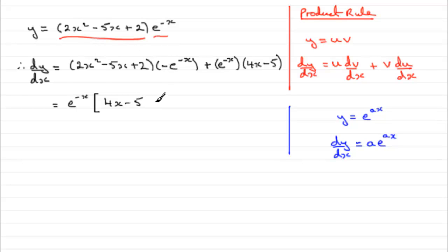But then we come on to this term, there's a minus here, so I'd want minus, and then I'd put a bracket with the 2x squared minus 5x plus 2 inside.